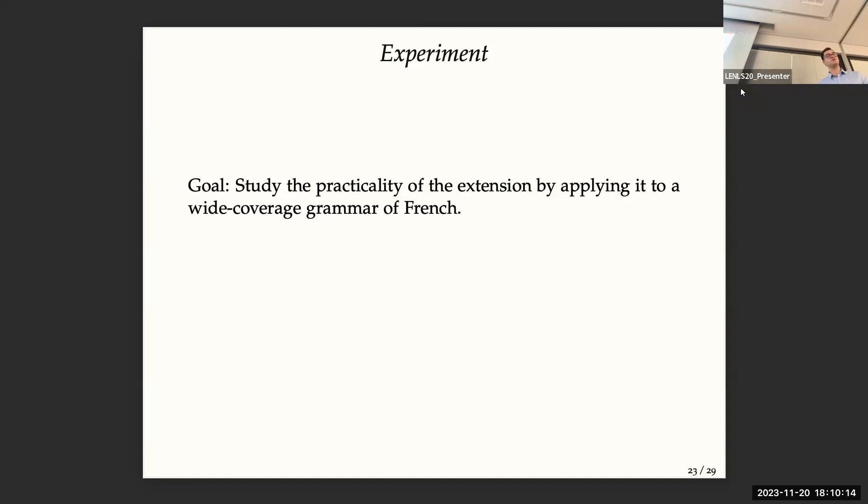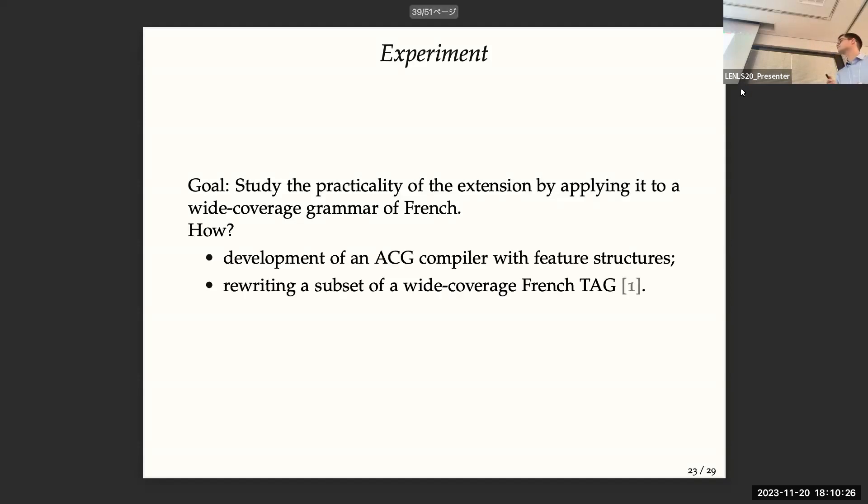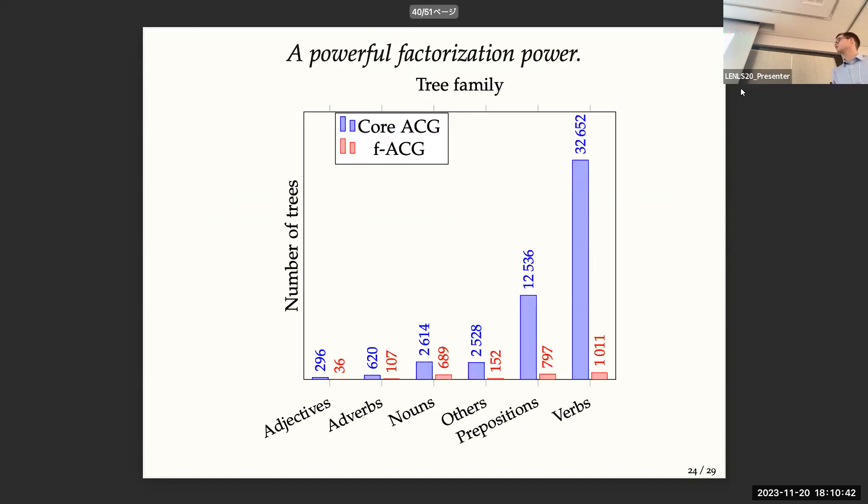I will switch now to several experiments that we did. So the goal was to study the practicality of the extension by working on wide coverage grammars. And so what we did was to develop an ACG compiler with this feature structure. And we rewritten a wide subset of a French TAG grammar. And so we have reduced, with this extension, the size of a grammar by 18. So you can see that the most impacted trees are verbs, prepositions, link words, and punctuation, and nouns. And so it seems that it works quite well.